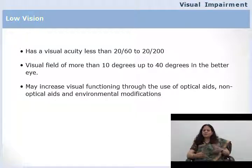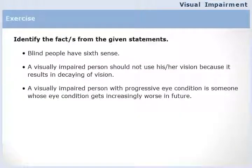Identify the fact or facts from the given statements: Blind people have a sixth sense. A visually impaired person should not use their vision because it results in decay of vision. A visually impaired person with a progressive eye condition is someone whose eye condition gets increasingly worse in the future.